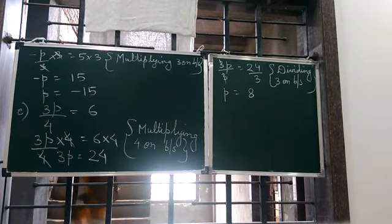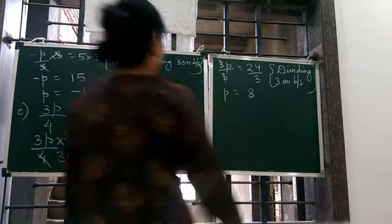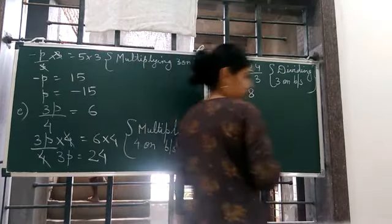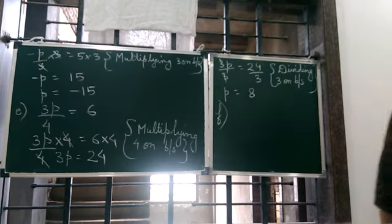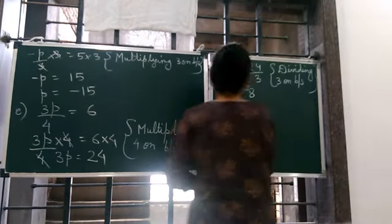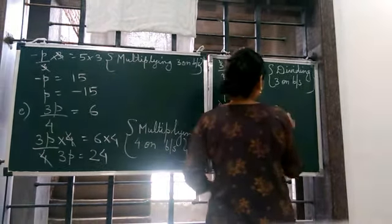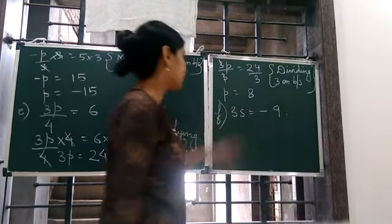Question number E. We start with that. 3s is equal to minus 9. So we have to remove this 3.